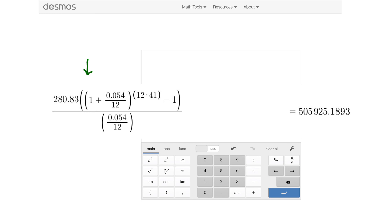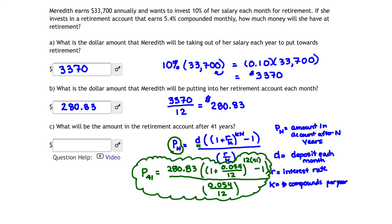And then the whole thing is divided by 0.054 over 12. So typing that into our Desmos calculator using all of our functions, we come up with the answer $505,925. And this is a dollar amount, so we have to make sure we round to the nearest two decimal places, or hundredths if you like. So we're going to look right to the right, so we're going to round that up, meaning that our answer is $505,925.19. Let's transfer that amount back in to our answer box. And I'm typing $505,925.19.